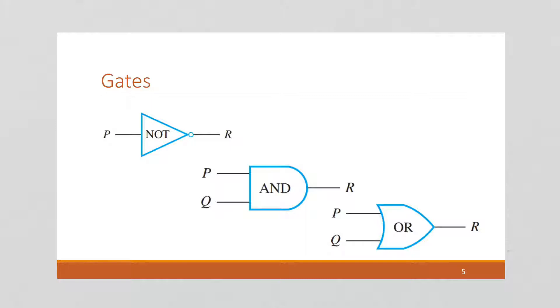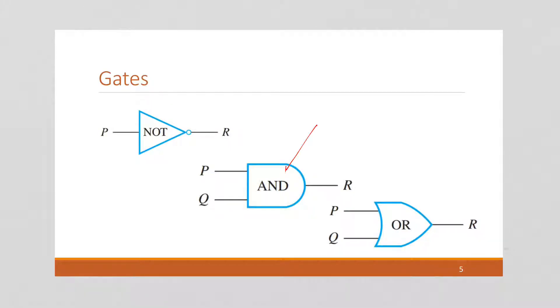We have three gates that are commonly used. We can package these circuits into gates. Inside this AND gate is that circuit we saw before with two switches that both have to be closed in order for the circuit to be complete. These gates each have their own shape. The NOT gate is a triangle with a little dot on the end. AND is nice and rounded on one side and flat on the other. I like to think of the OR gate as looking kind of like a little spaceship.